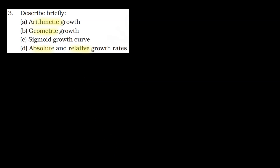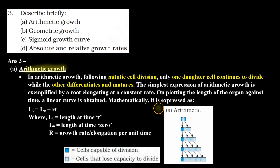In this question, you have to explain what is happening in each part. For arithmetic growth, following mitotic cell division, two new daughter cells are formed. In this part, we look at how mitotic cell division produces two new daughter cells.